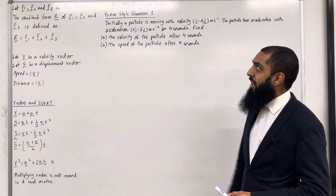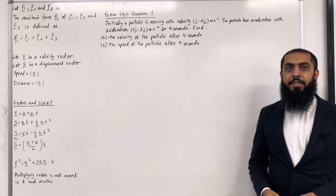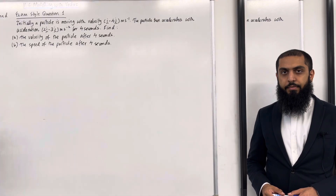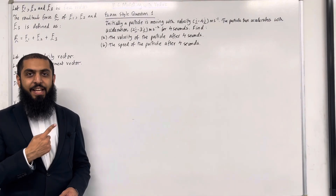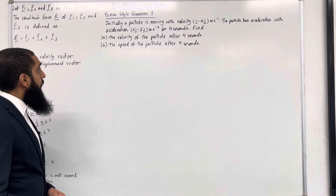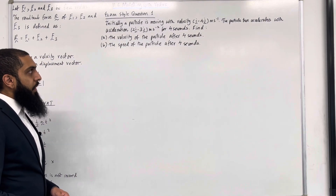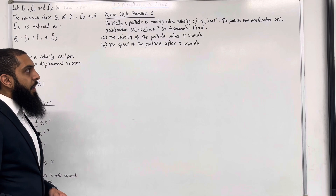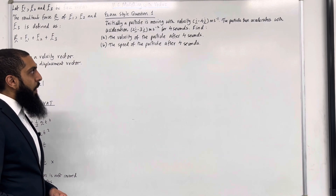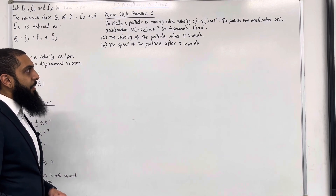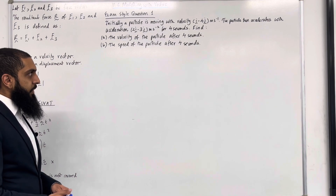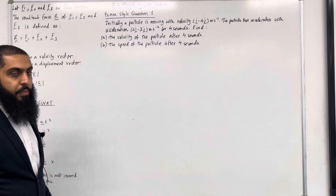Those are the key facts of 11.6 Modelling with Vectors. I'll be implementing these key facts within exam-style questions. Here is exam-style question 1. Initially, a particle is moving with velocity i minus 4j metres per second. The particle then accelerates with acceleration 2i minus 3j metres per second squared for 4 seconds. Find part A: the velocity of the particle after 4 seconds. Let's have a look at the solution to part A.